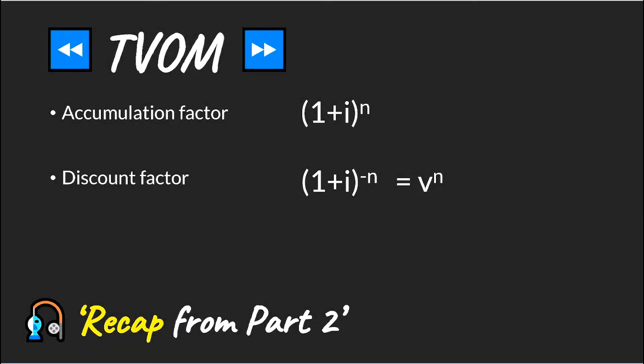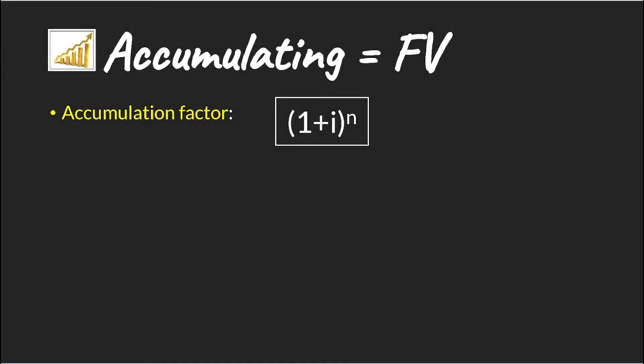Now, what's important for us is to be able to calculate the present value and future value of cash flows. And to do this, we need an accumulation factor and a discount factor, as we've seen in previous videos. So to calculate our accumulation factor using a force of interest, we simply start off with what we already know. And to come up with an accumulation factor over the period 0 to N, we simply raise each side to the power N, giving us our accumulation factor.